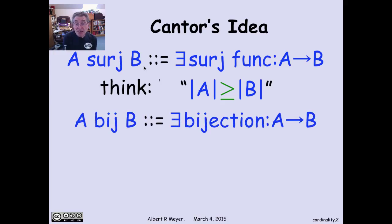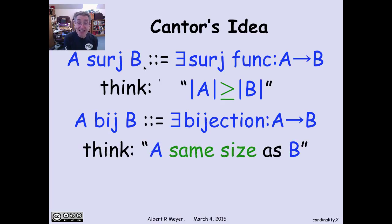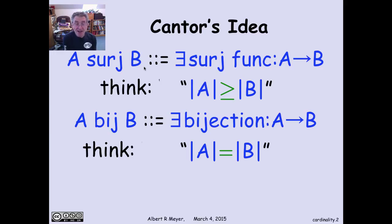Similarly, bijection is even easier. A bij B means that there's a bijection from A to B. And we're going to interpret that as saying that A and B are the same size. That is, for finite sets, it literally means A and B have the same number of elements. And we're going to adopt the notion of a bijective relation for infinite sets as meaning, I don't know what their size is, but I know it's the same because there's a bijection between them. There's a perfect one-to-one correspondence between A's and B's.